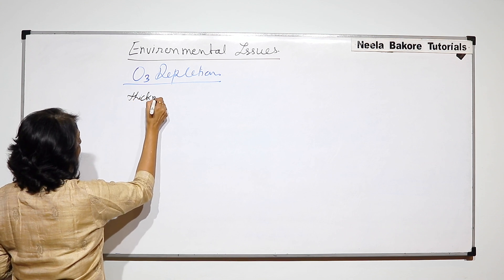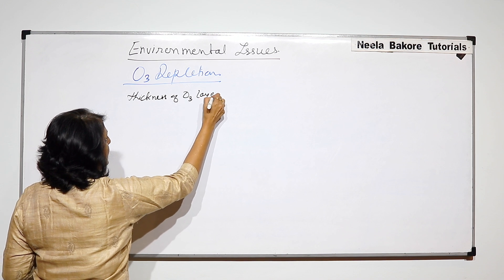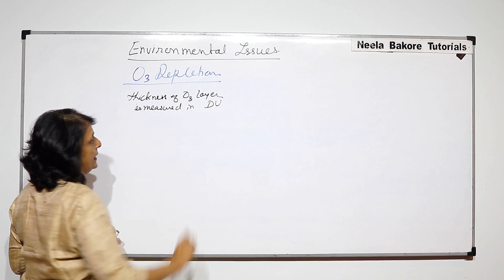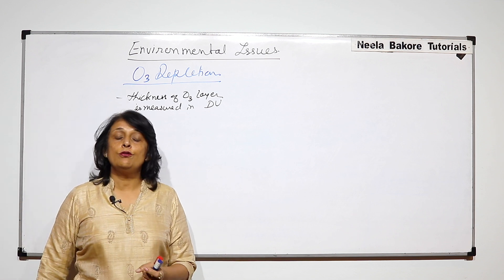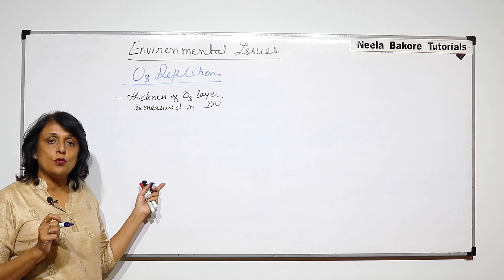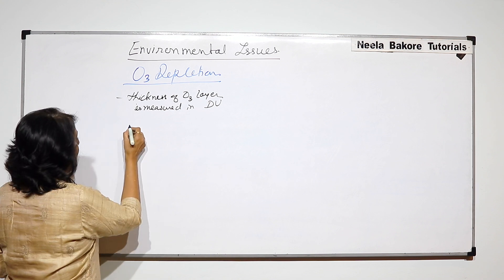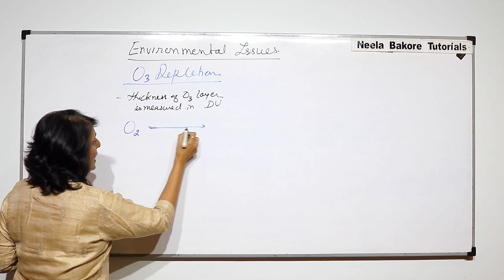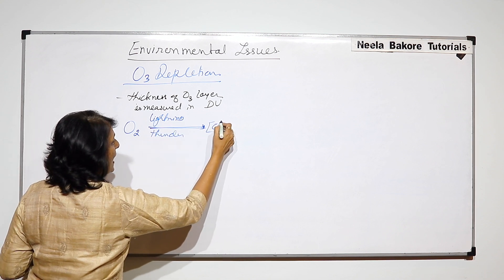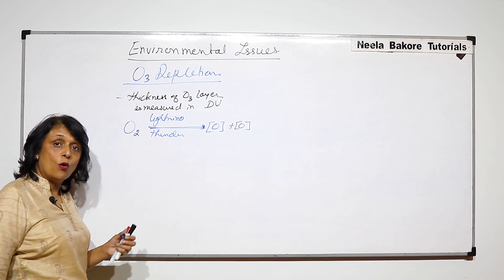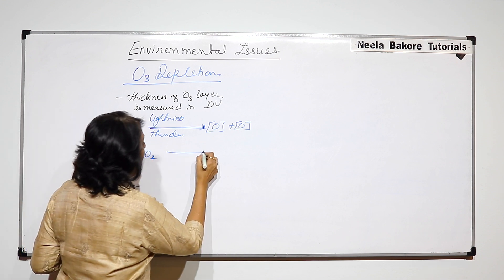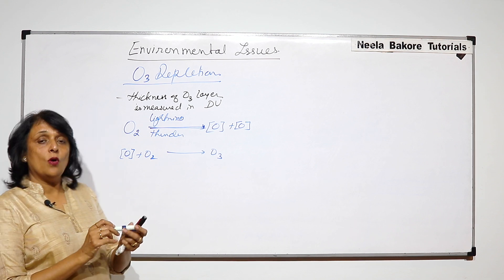The thickness of ozone layer is measured in Dobson unit and this thickness varies according to season. Why does this thickness vary according to season? That is, for formation of ozone, lightning and thunder, high energy is required. So what happens is oxygen splits in presence of lightning and thunder into two atoms of nascent oxygen. This nascent oxygen combines with molecular oxygen again in presence of lightning, and ozone is formed. So this ozone gets added to the layer.